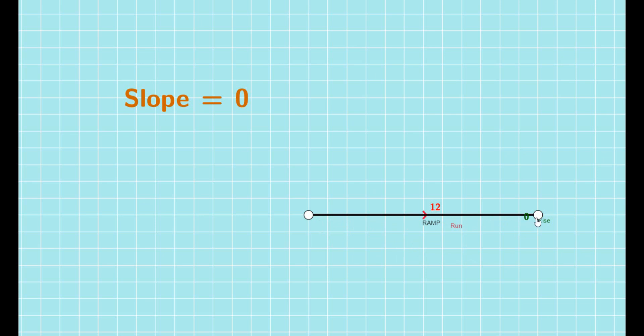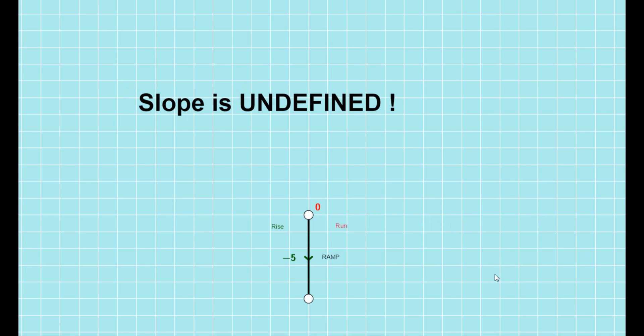Let's come to other two values, zero and not defined, and see what they mean. You see now it is showing slope to be zero because the rise is zero now. So no matter how much we change run, the slope is going to be zero always.